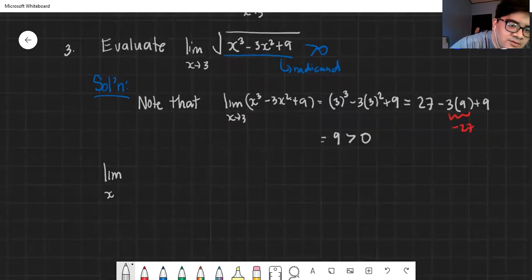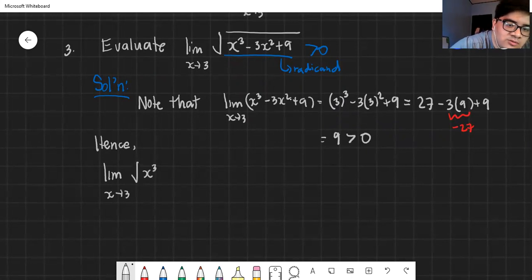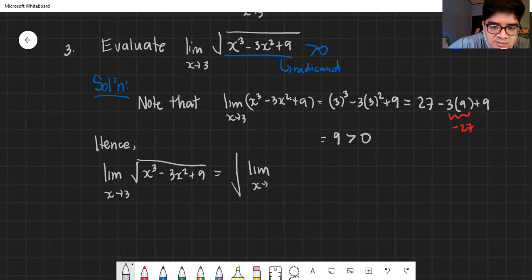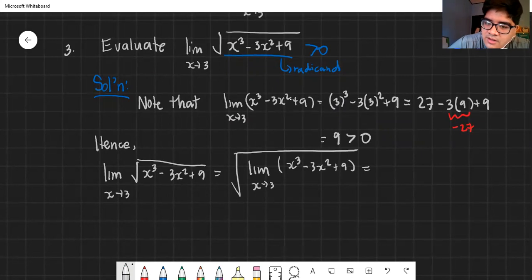Copy the given: the limit as x approaches 3 of the square root of x cubed minus 3x squared plus 9. You just put the square root and put the limit inside. The limit as x approaches 3 of x cubed minus 3x squared plus 9. What happens? You already got that limit. What is that limit? It's 9. You already found that above. That helps you with the solution. Now, this is the square root of 9, or basically 3. That's pretty much it.